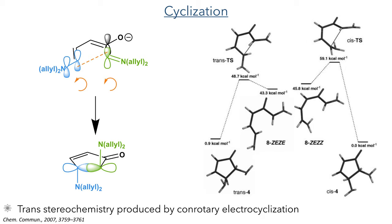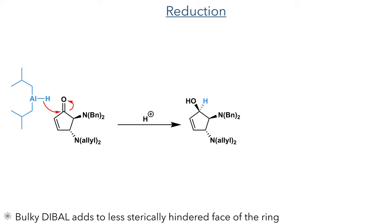Taking this diamine forward, the carbonyl was then reduced using DIBAL, which is a bulky reducing agent that adds to the less sterically hindered bottom face of the ring, producing an alcohol upon protonation. This alcohol was then protected as a silyl group using TBS chloride.